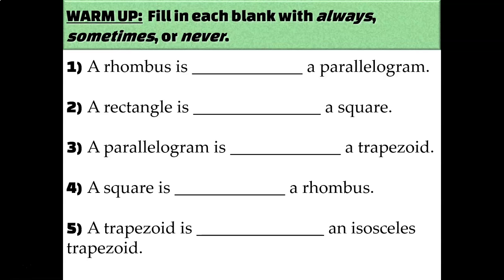Let's see how you did. A rhombus is always a parallelogram — that is part of the definition of a rhombus. A rhombus is a parallelogram with four congruent sides, so a rhombus is always going to be a parallelogram.